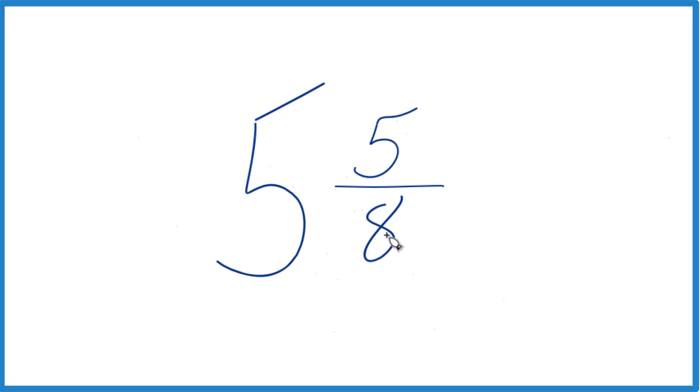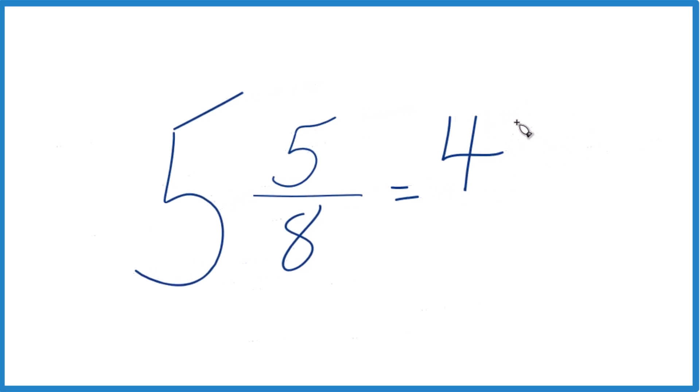So 5 times 8, 40, 40 plus 5, that gives us 45. That's our numerator.